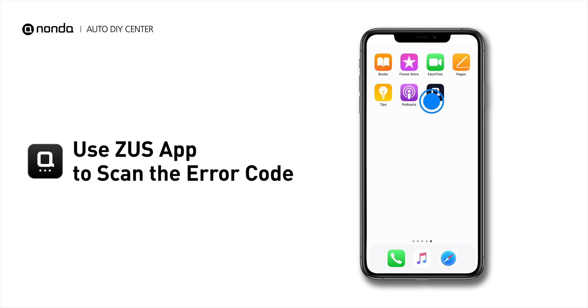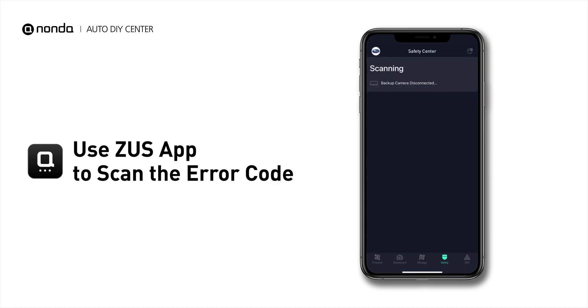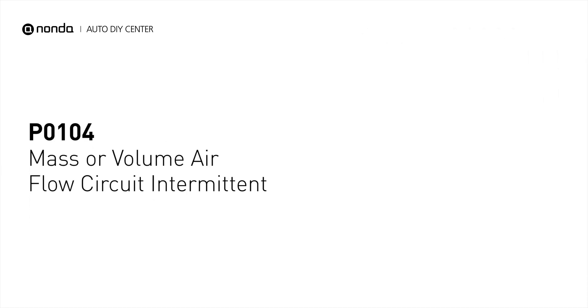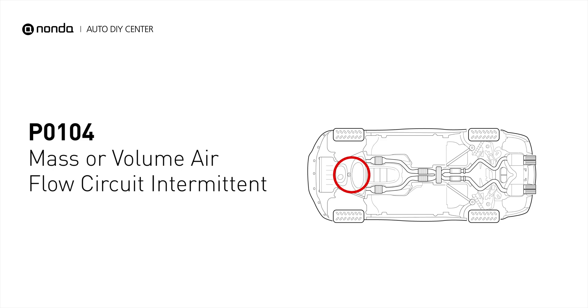Use the Zeus app to scan your vehicle and see the error code P0104. It means that the electrical circuit of the MAF sensor produces inconsistent, erratic, or irregularly high output voltage signal to the engine control unit.